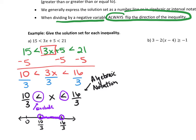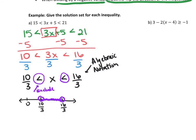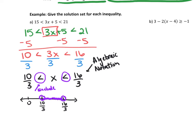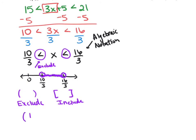We're excluding here because there is no equal sign underneath the symbol. Sometimes you will include, depending on whether there's a symbol underneath. This graphical representation is called the number line for the solution. We can also do what's called interval notation. The interval is created by looking at the number line. We use parentheses where parentheses mean to exclude, or brackets where brackets mean to include. Here, because we're excluding the values, we use parentheses: (10/3, 16/3). This says take every X in between 10/3 and 16/3, not including either endpoint.